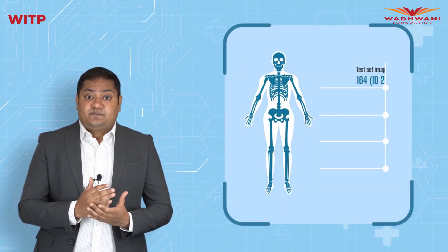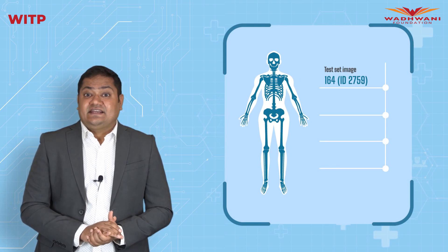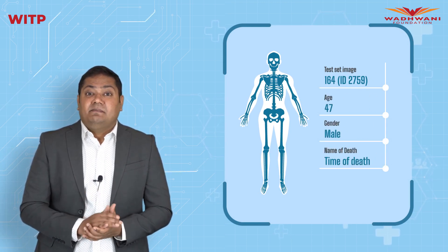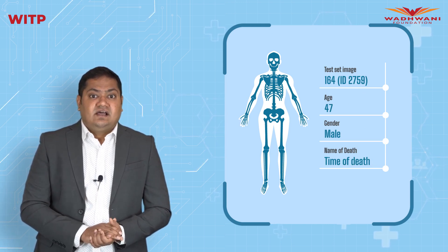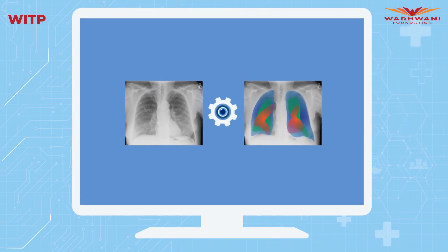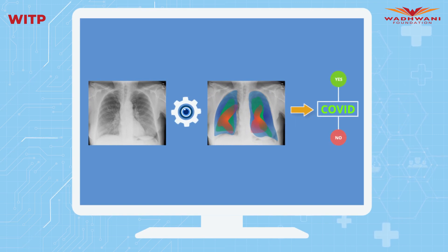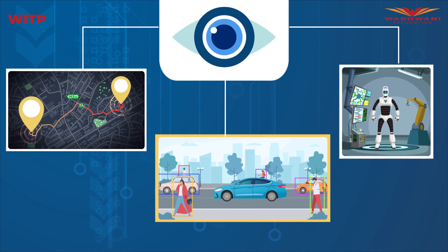From a government's forensics point of view, computer vision can help get information on age, gender, and time of death by looking at an image of a bone skeleton. Another application developed during the pandemic was to study X-ray scans of lungs and suggest whether they are impacted by COVID or not.